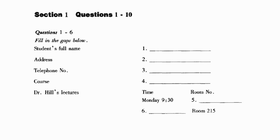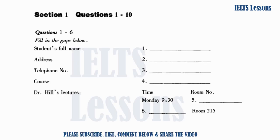You will hear a number of different recordings and you will have to answer questions on what you hear. There will be time for you to read the instructions and questions, and you will have a chance to check your work. All the recordings will be played only once. The test is in four sections. Write all your answers in the listening question booklet. At the end of the test, you will be given ten minutes to transfer your answers to an answer sheet. Now turn to section one.